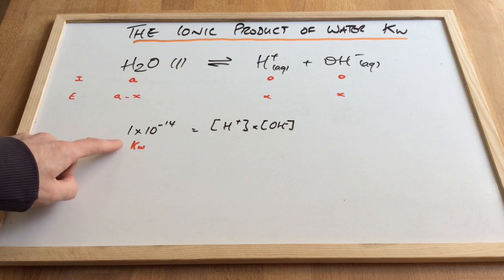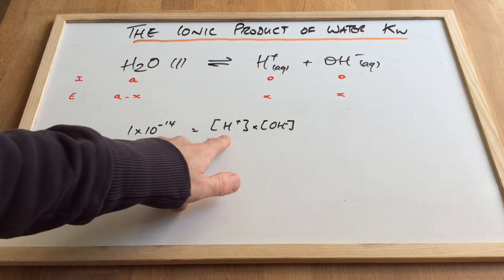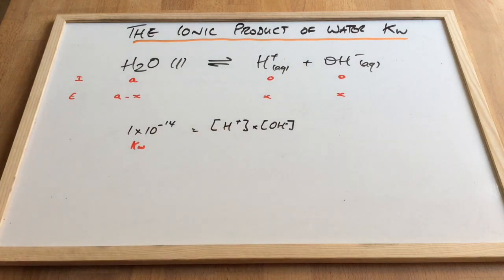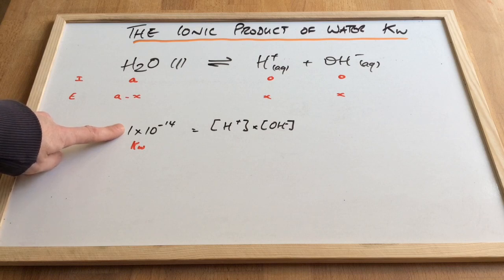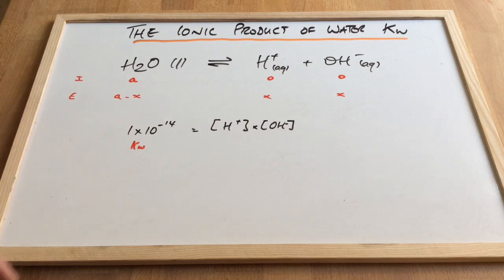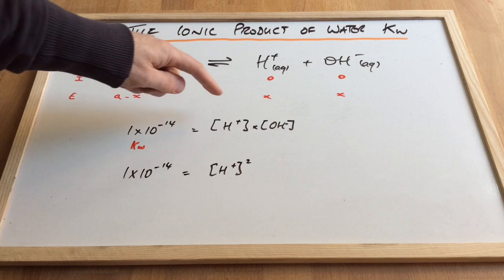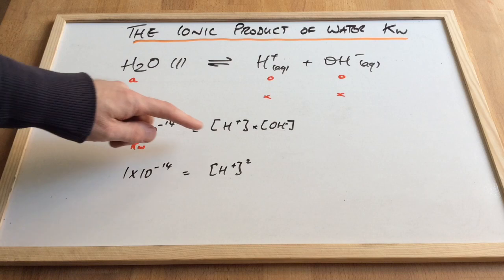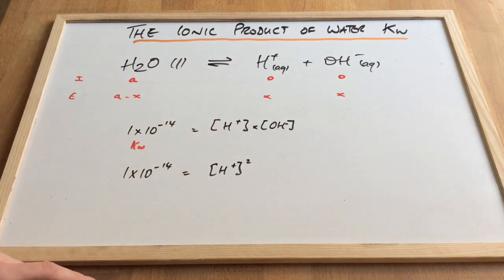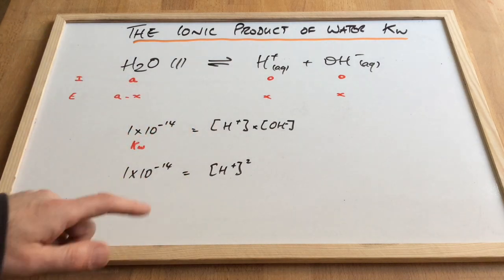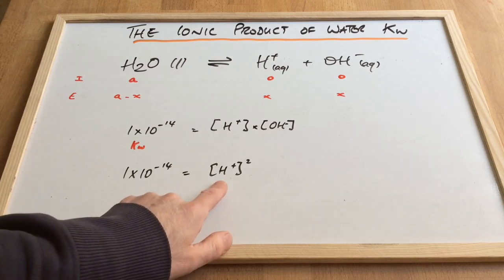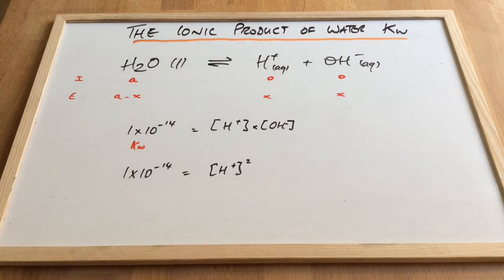We've just found out that the KW, we can write the dissociation of water as KW equals H+ concentration times OH- concentration. And because we're doing this at 298 Kelvin, we know that the value for that would be 1 times 10 to the minus 14. Because these two concentrations are always the same, because of the way this dissociation takes place, we can simplify this to the concentration of H+ squared is 1 times 10 to the minus 14. And remember, if we want to calculate the pH of anything, so it's water in this case, we need to know what the concentration of H+ is, so we can then minus log it.